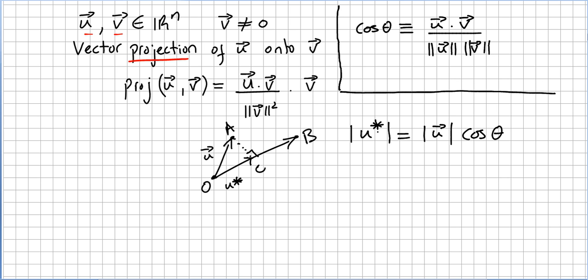So I'm going to show you that this vector projection is the same as the one we just defined. We just defined the cosine of theta as u · v divided by the norm of u times the norm of v. So what is this vector projection here? What is u*?